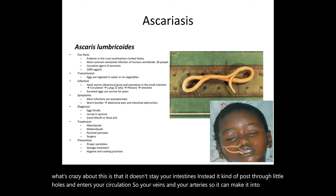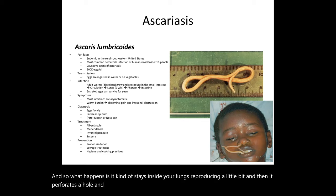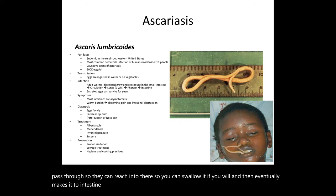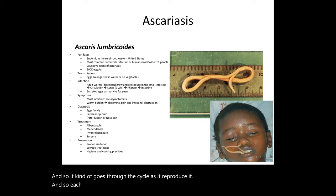From the circulation, they can make it into your lungs, where they reproduce a little, then perforate a hole into your pharynx — your windpipe. They then pass through so you can essentially swallow them, and they make it back to your intestine again. Each cycle, they produce several hundred thousand eggs on a daily basis.